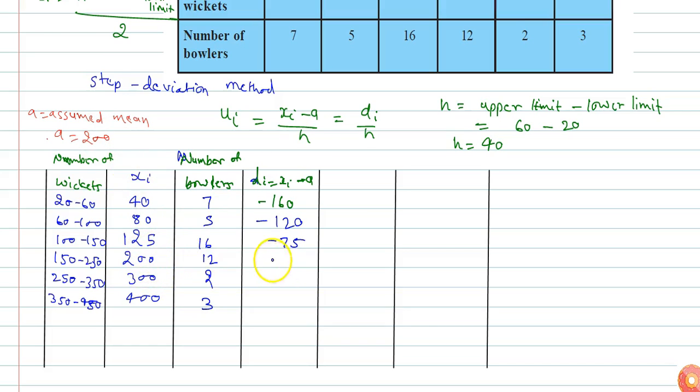200 minus 200 equals 0, 300 minus 200 equals 100, and 400 minus 200 equals 200. I've calculated the di column.